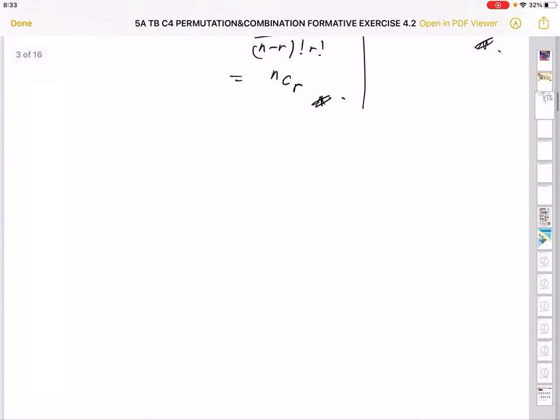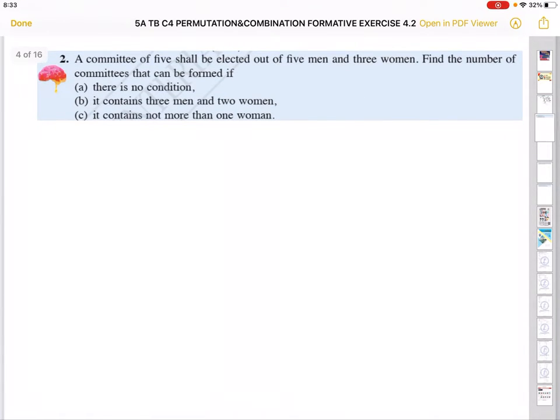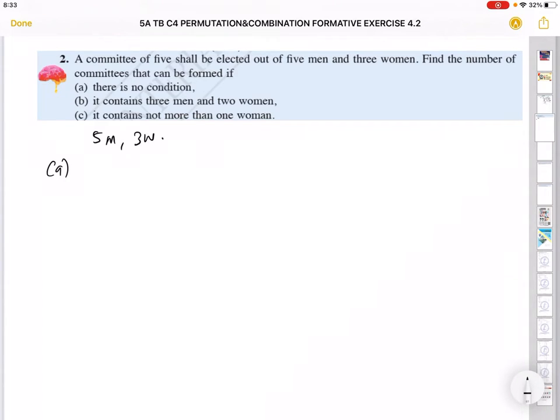Let's move on to question number two. Here we have a committee of five shall be elected out of five men and three women. Find the number of ways a committee can be formed if there's no condition. Now, if you have no condition, you can choose any one of the men and women. You have total eight of them and you want to find a committee of five. So, it's 8C5, you type in the calculator, it's just 56.